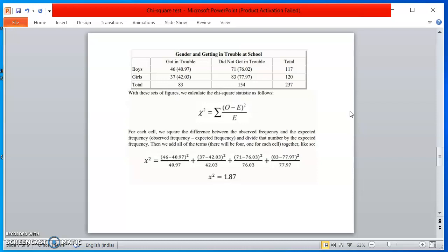And you can keep your score over here. Chi-square equals, within bracket, 46—46 is the raw score—minus 40.97. 40.97 is the expected score, squared, divided by the expected score. So expected score for boys got in trouble is 40.97. Plus (37 minus 42.03)². 37 is for girls got in trouble. 42.03 is the expected score for girls who got in trouble.